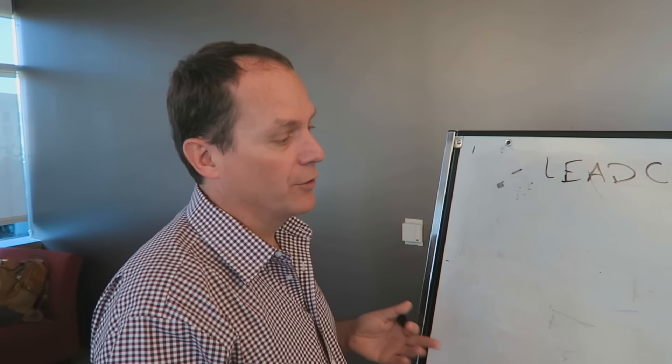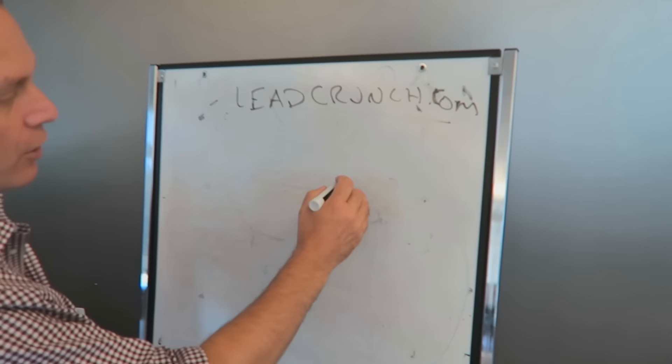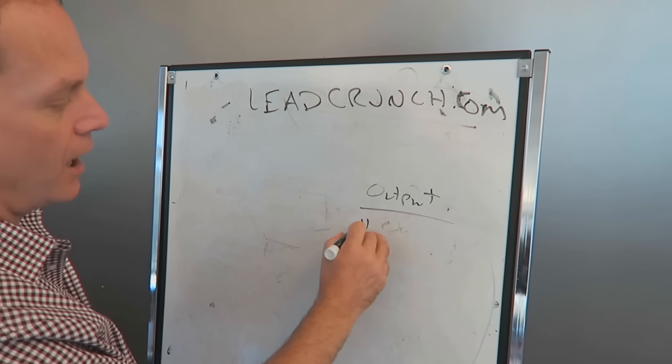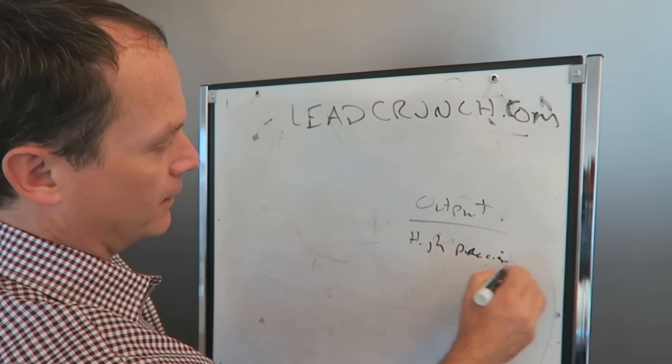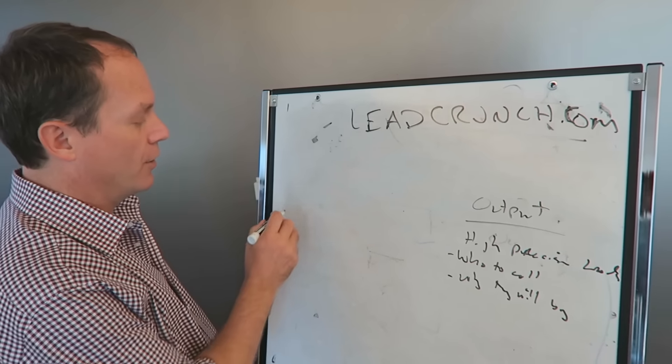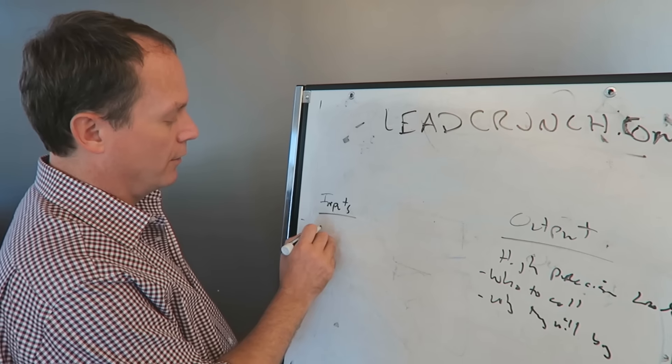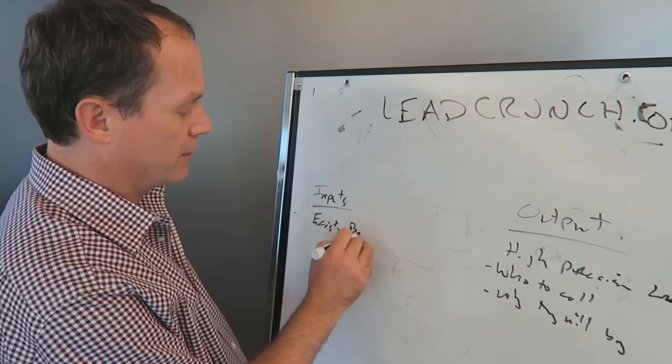In general machine learning kind of works generally the same way in that we know what we want as an output. In this case we want high precision leads, and so the inputs are the existing best customers.